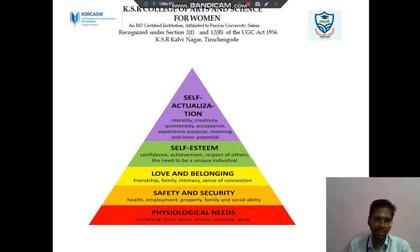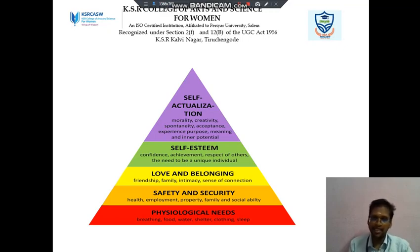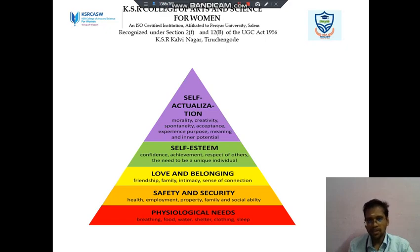The next point is safety and security, which covers health, employment, property, family, and social stability. Then love and belongingness, which includes friendship, family, intimacy, and a sense of connection. Then self-esteem: confidence, achievement, respect of others, and the need to be a unique individual.